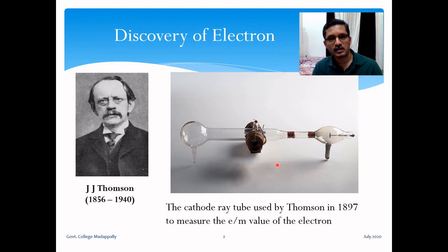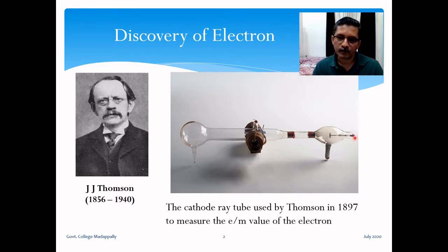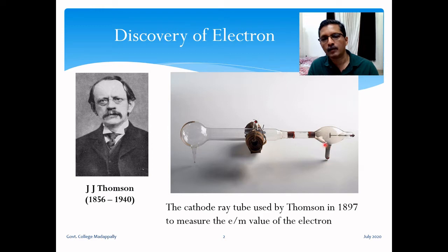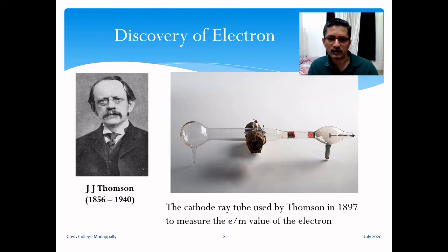In Thomson's redesigned tube, two metal electrodes are sealed inside the tube and connected to external wires. Negative voltage is applied to the cathode and positive voltage to the anode. A wire connects to two anodes, which also have horizontal slits. When the electron beam is accelerated from cathode toward the anode, it passes through these small horizontal slits, so the anodes also act as collimators, producing a narrow beam of electrons.